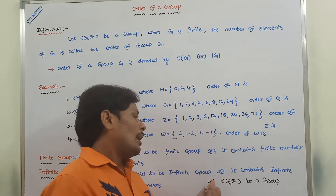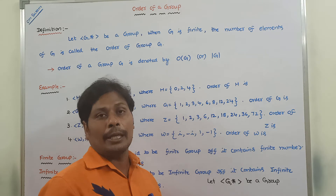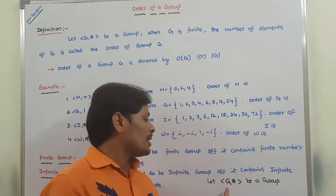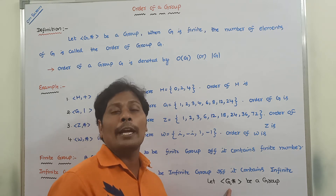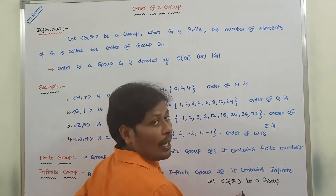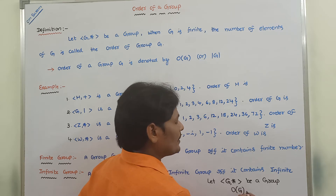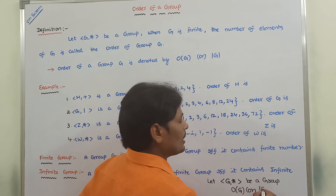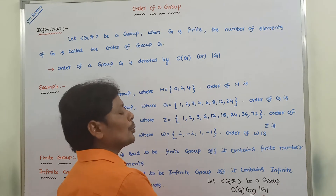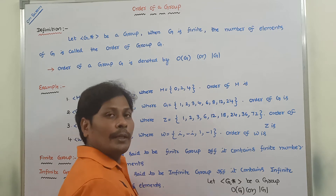Now, what is the order of a group? Let us consider (G, *) be a group where G is a finite set. The order of a group G is nothing but the number of elements of G. The order of G can be denoted by O(G) or |G|. So |G| is nothing but the number of elements of group G.